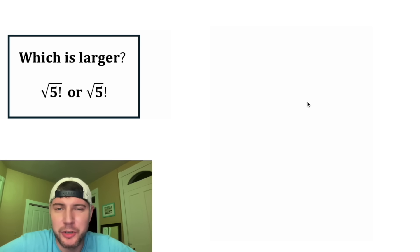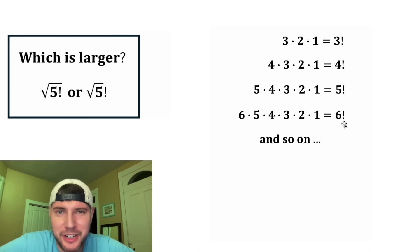Both of these contain a factorial. Let's talk about factorials. Here are some examples of whole number factorials. 3 factorial means 3 times 2 times 1, 4 factorial is 4 times 3 times 2 times 1, and 5 factorial is 5 times 4 times 3 times 2 times 1, and so on.